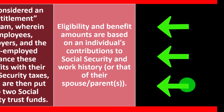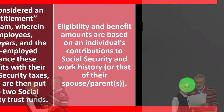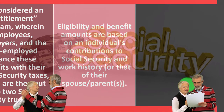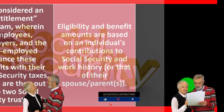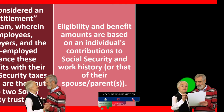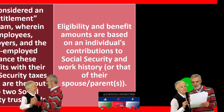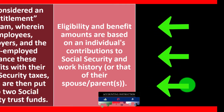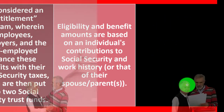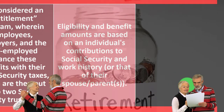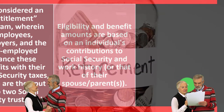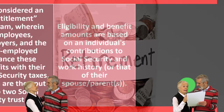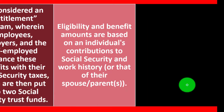Eligibility and benefit amounts are based on an individual's contribution to Social Security and work history, or that of their spouse. How much you get will be dependent on how much you put in. The more money you've put into Social Security, the more benefit you'll get out — closer to a retirement plan idea. However, you get less and less benefit as your income goes higher, so each additional dollar earned gives you a diminishing benefit.